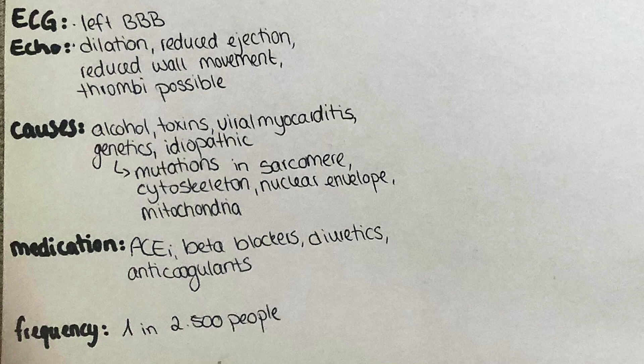It can also affect the cytoskeleton — more specifically the delta or beta-sarcoglycan, dystrophin, or desmin. Mutations in the nuclear envelope or the mitochondria are also possible. These mutations lead to a defect either affecting the force generation or force transmission necessary for proper function of the heart tissue.